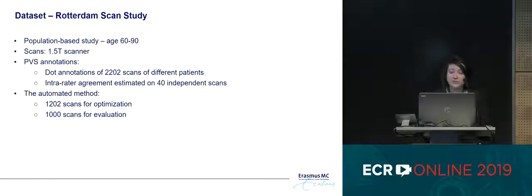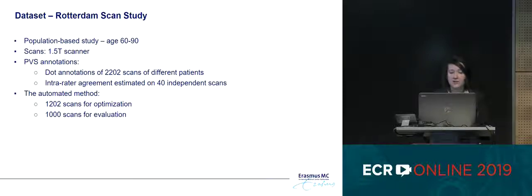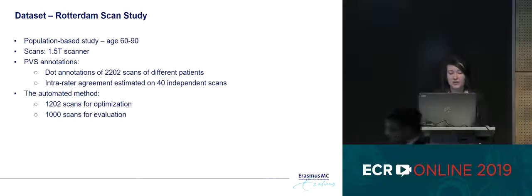The dataset we used to optimize our methods and evaluate its performance is the Rotterdam scan study — a population-based study with participants aged between 60 and 90 years. The scans were acquired using a 1.5 Tesla scanner, and in 2,200 of those scans from different patients, we had dot annotations of perivascular spaces. On 40 additional scans, we measured the intra-rater agreement. We used 1,200 scans to optimize our methods and 1,000 other scans to evaluate its performance.